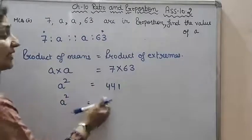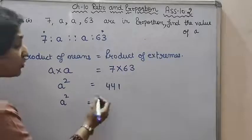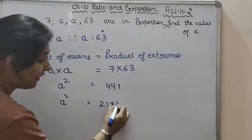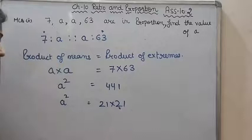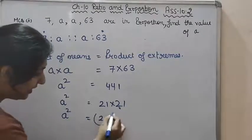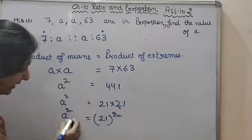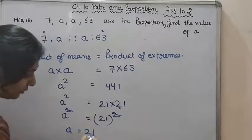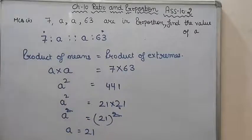So I'll write it as twenty-one into twenty-one. So it becomes A square is equals to twenty-one square. Squares cancel. So A's value is twenty-one. Hope this is clear.